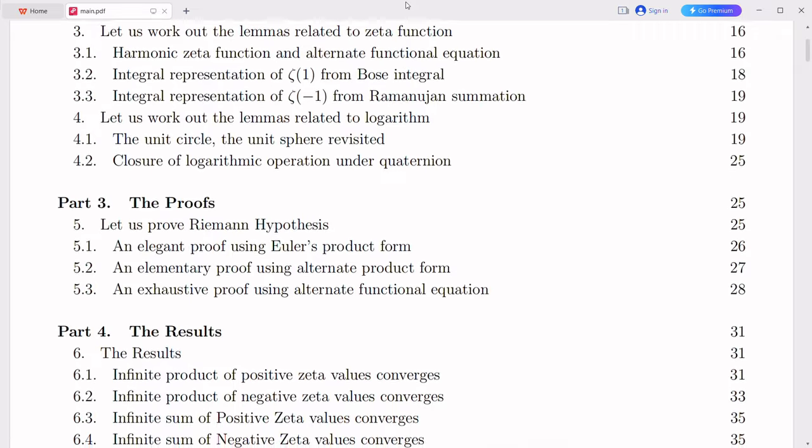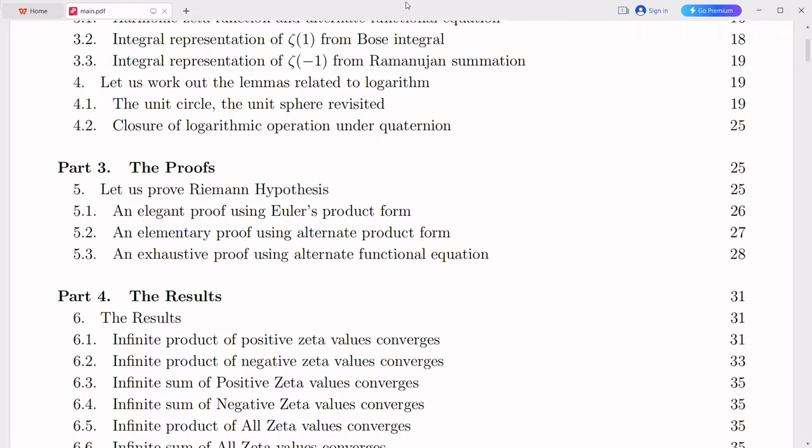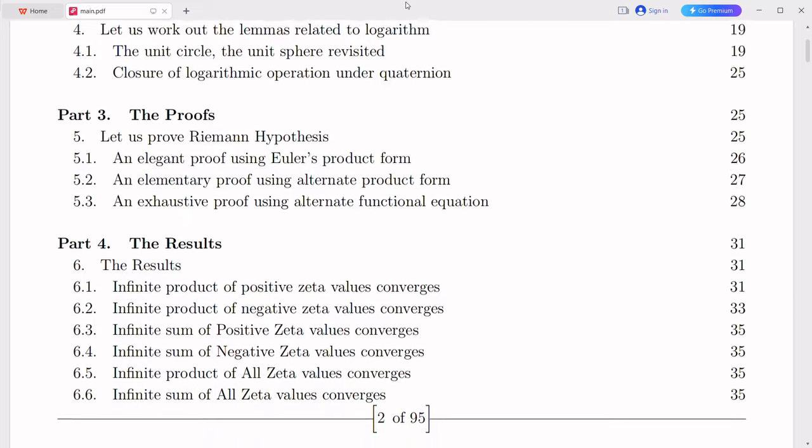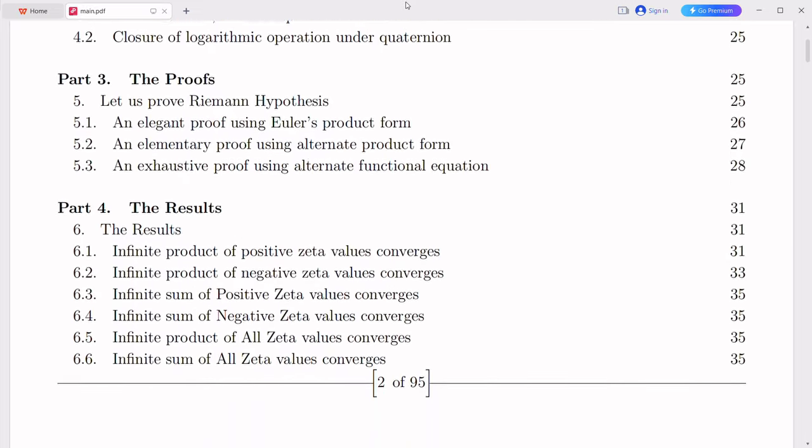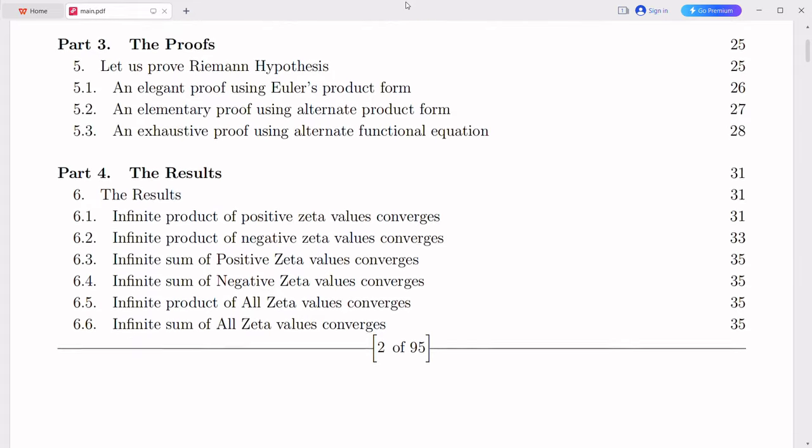It is computed by summing the reciprocals of all positive integers raised to the power of minus s, starting from 1 and continuing infinitely. In other words, zeta(s) is expressed as the sum of 1^(-s) + 2^(-s) + 3^(-s) and so on, extending to infinity.